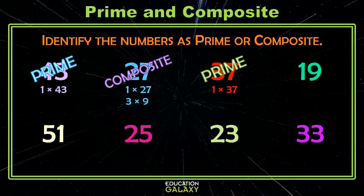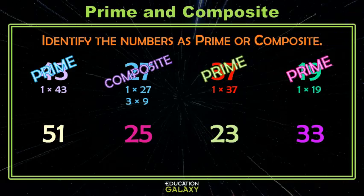19 — 1 and 19, of course. And if you can't think of any others, boom, that one's also prime. 51, a number a little bigger. We know 1 and 51. And can you think of any others? Hmm, I know — 3 and 17.